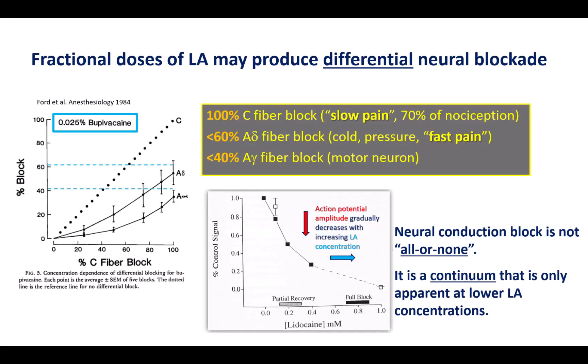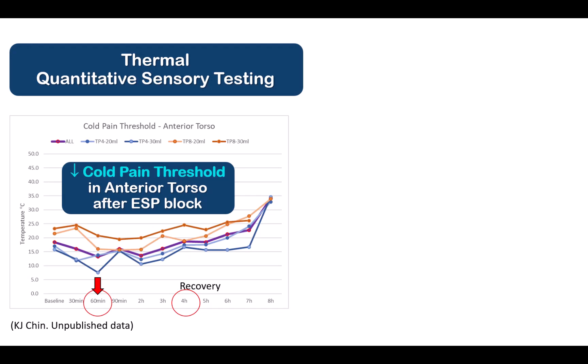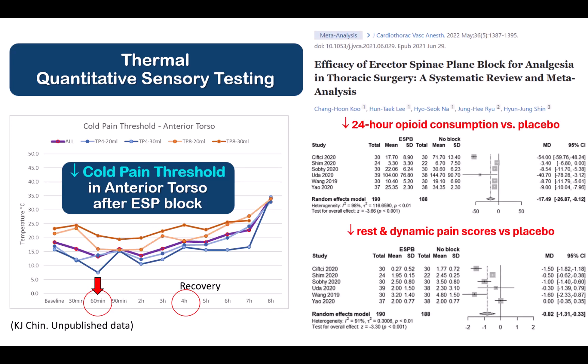The second factor is differential block. Below a particular threshold concentration of local anesthetic, different nerve fibers exhibit different sensitivity to conduction block. The smallest unmyelinated C fibers are most sensitive and are blocked at lower concentrations compared to larger, more myelinated fibers. It's these C fibers that transmit most nociceptive impulses, especially second or slow pain. Future volunteer studies of ESP blocks may need to test cutaneous sensation with more sensitive nociceptive stimuli such as heat or cold pain using a QST device. In clinical practice, we do see patients obtaining meaningful reductions in pain scores and opiate use when ESP blocks are performed.